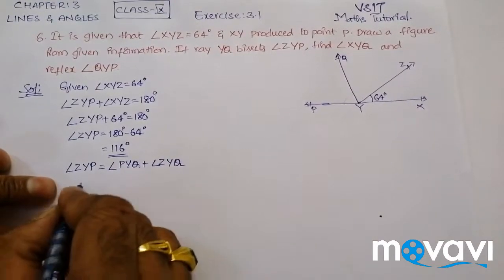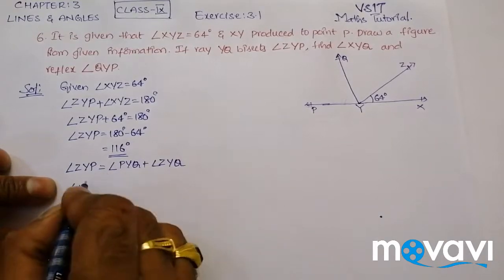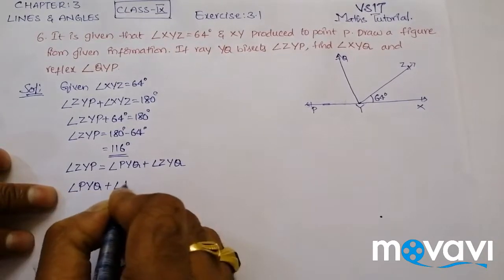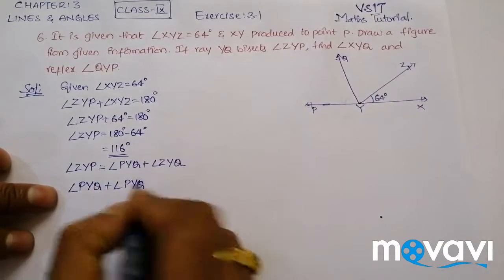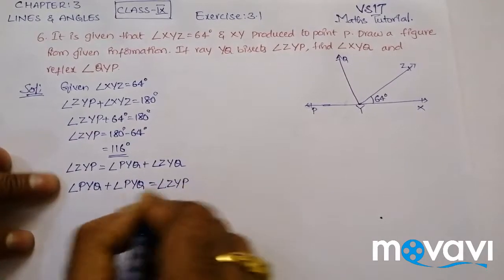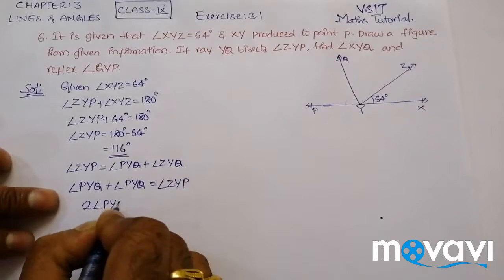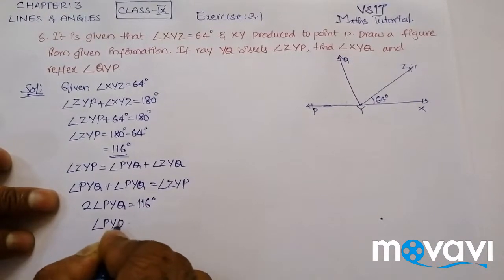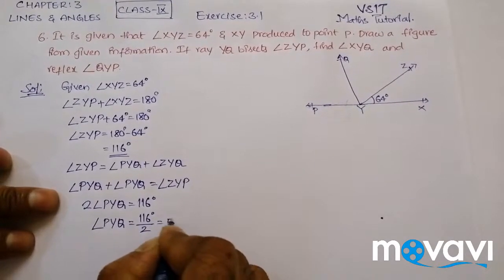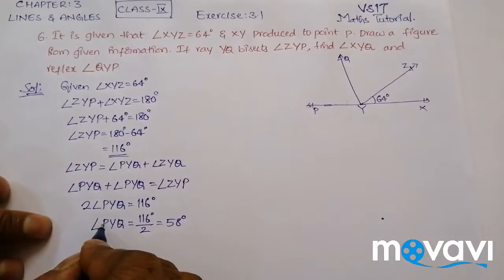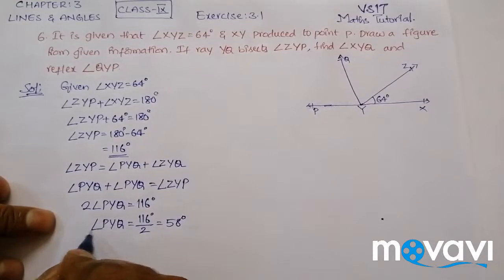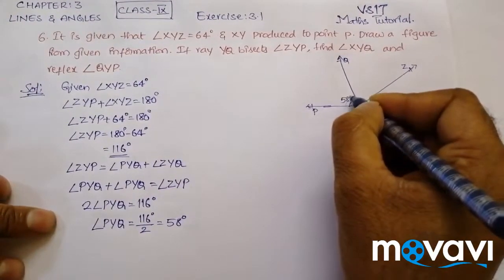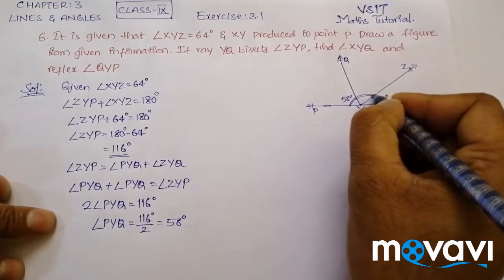So writing it out: Angle PYQ plus Angle PYQ is equal to Angle ZYP. That means 2 times Angle PYQ equals 116 degrees. Therefore, Angle PYQ equals 116 divided by 2, which is 58 degrees. Since YQ bisects the angle, both Angle PYQ and Angle ZYQ are equal to 58 degrees.